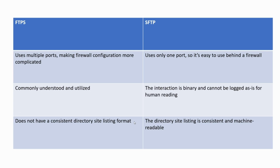FTPS uses multiple ports, making firewall configuration more complicated. With multiple ports, configuration complexity increases. SFTP uses only one port, so it is easier to use behind a firewall. FTPS is commonly understood and easy to implement, similar to standard FTP. SFTP interaction is binary and cannot be logged in a human-readable format, making it not as easy to implement as FTP.